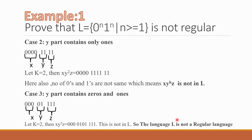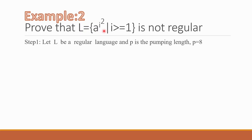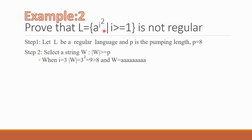Next question — Example 2: Prove that L = {a^(i²) | i ≥ 1} is not regular. Step 1: Let L be a regular language and p be the pumping length. Assume p is equal to 8. Then select a string w such that |w| is greater than or equal to p. When i equals 3, i² equals 9, so w = a^9. The length is 9, which is greater than our pumping length of 8.